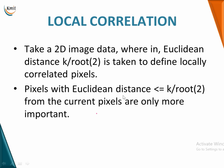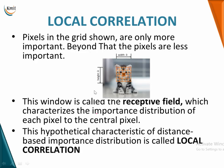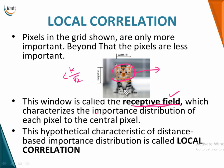The pixels in the grid are only important with respect to the center pixel — those within the Euclidean distance boundary are relevant; pixels beyond that are less important. The window within which we calculate which pixels fall inside the boundary of k/√2 is called the receptive field. This receptive field characterizes which important pixels are present in that distribution. This hypothetical characteristic of distance-based importance distribution is called local correlation.